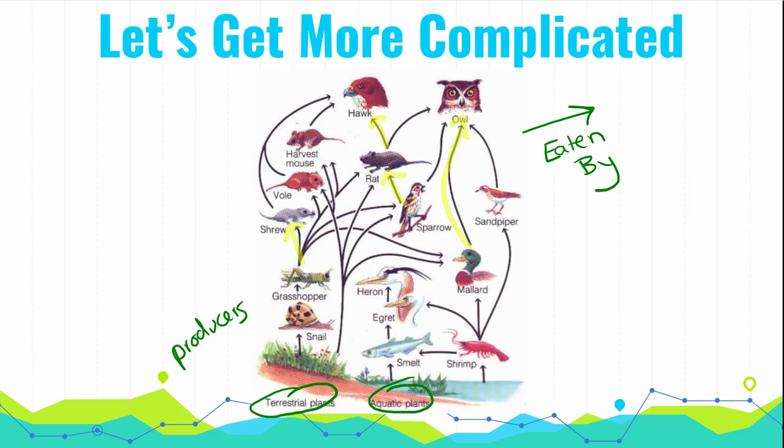Remember we have our different levels of our consumers. Our primary consumers are the ones that eat our plants. So we have shrimp, we have schmelt, we have snails. We could also write primary consumer as like a one with a little superscript, a zero.